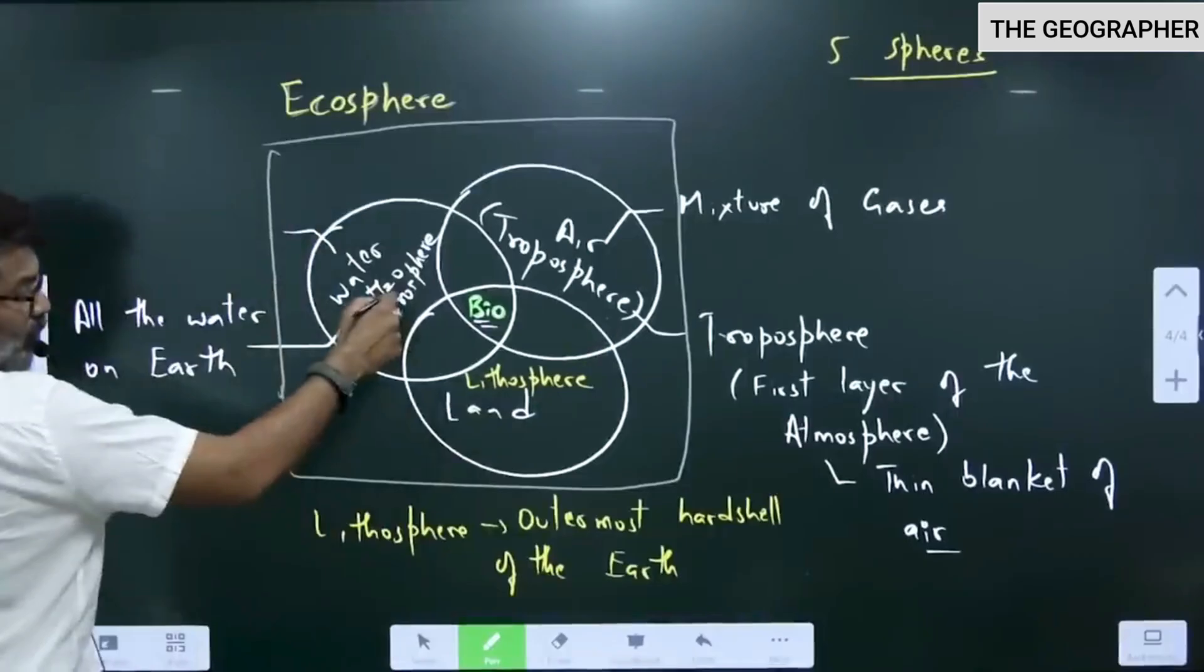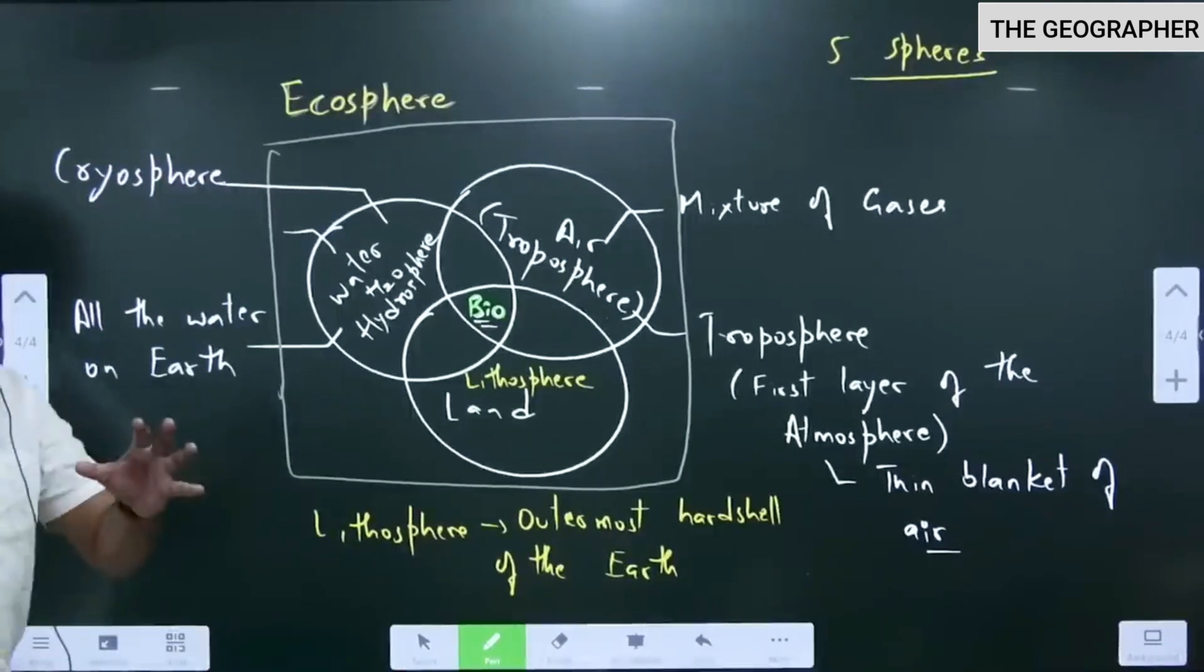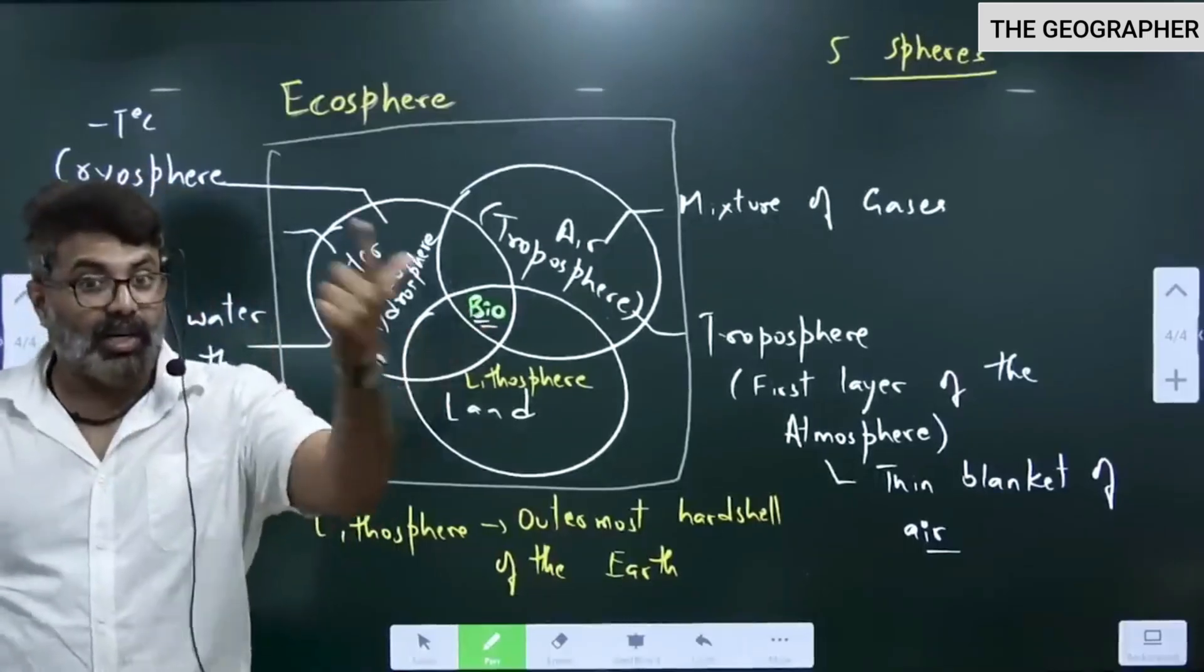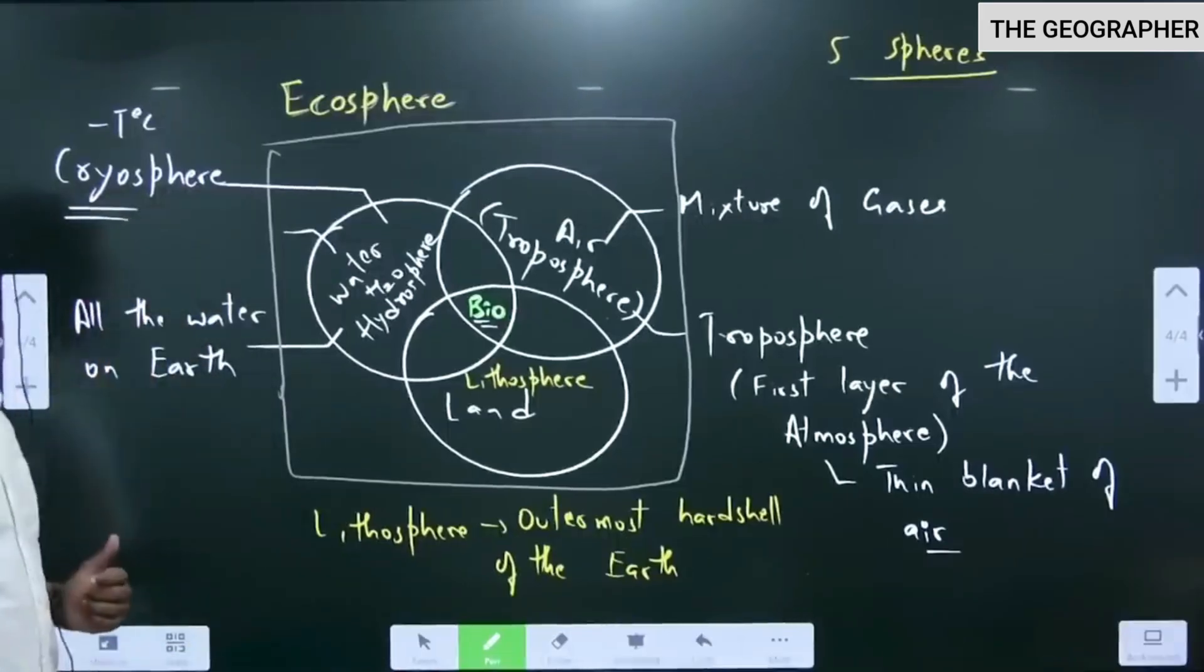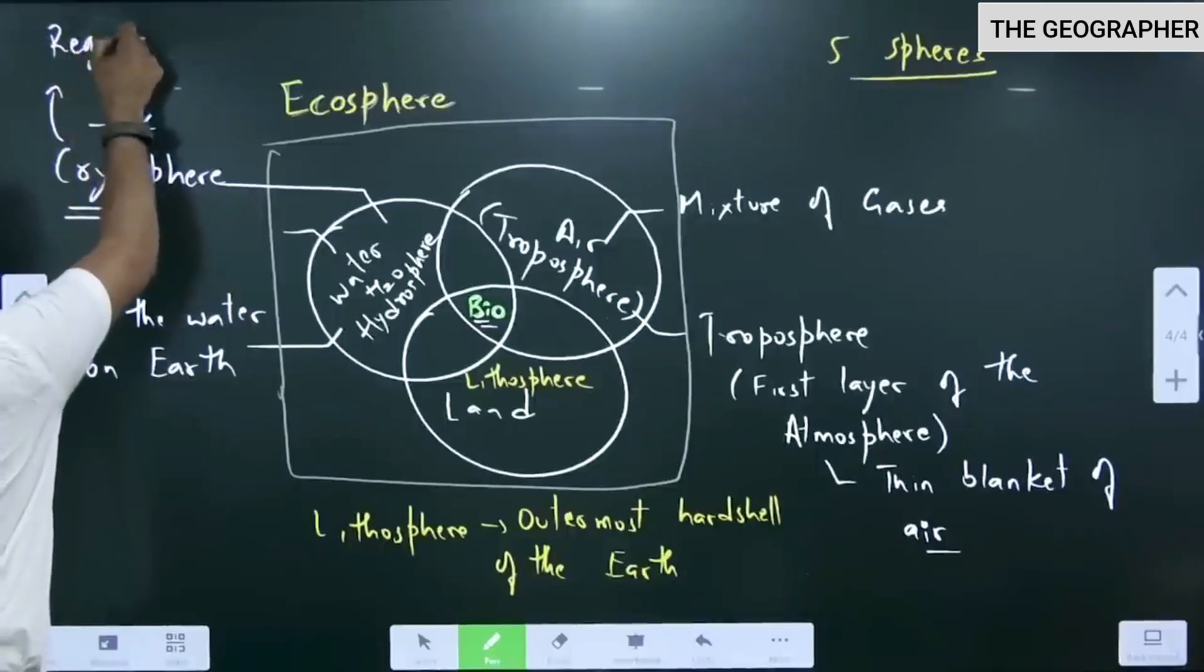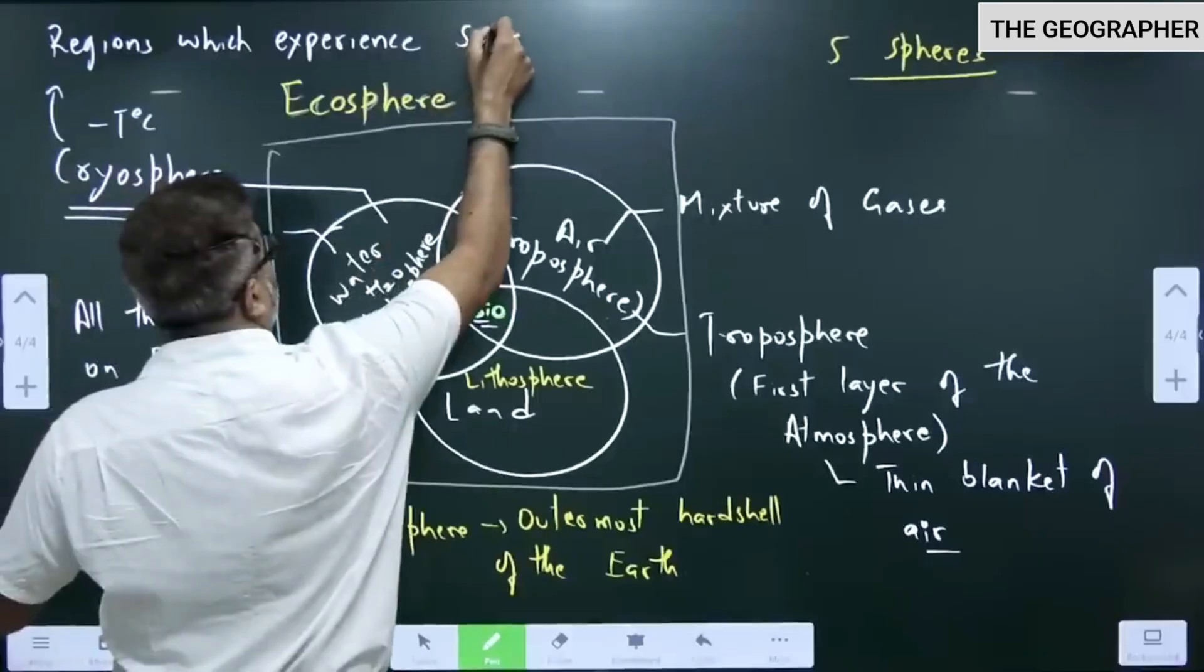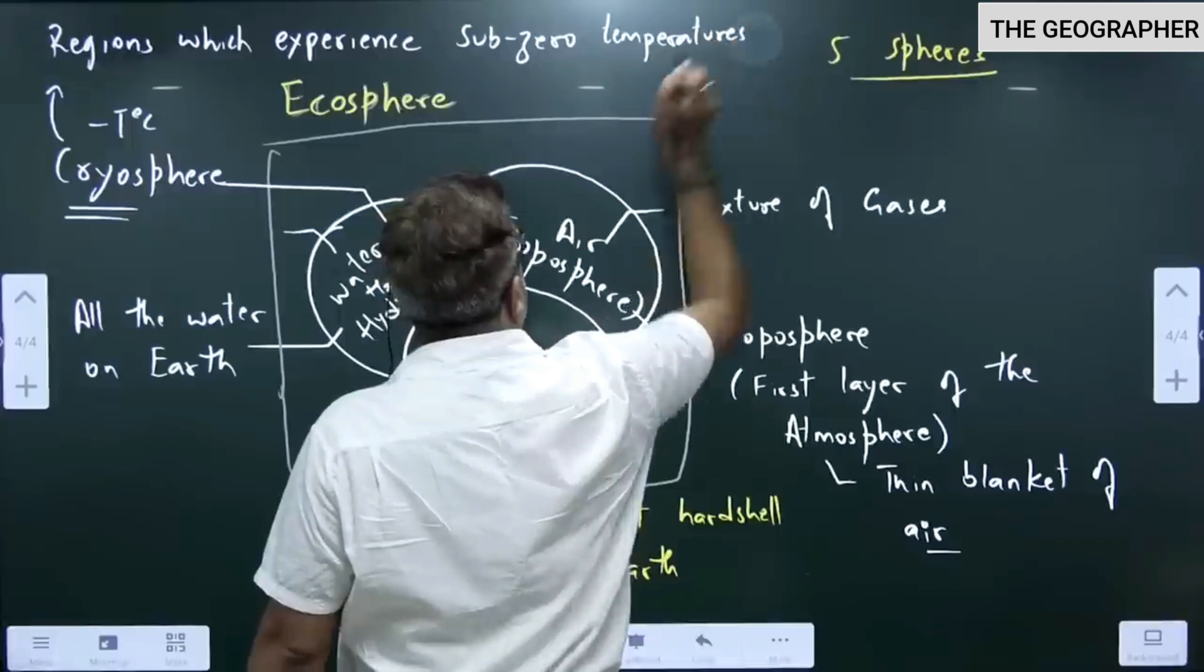There are certain words I will mention. Like part of water which is frozen is cryosphere. Cryosphere is the regions on earth with sub-zero temperature. What is sub-zero? Temperature is below zero. There are certain places on earth where the temperature is below zero, where the water is frozen in the form of ice. Throughout the year, sub-zero temperature are known as cryosphere.